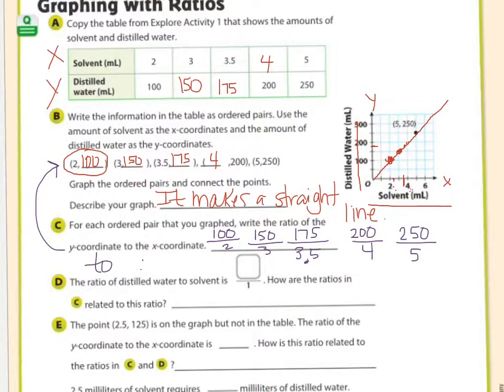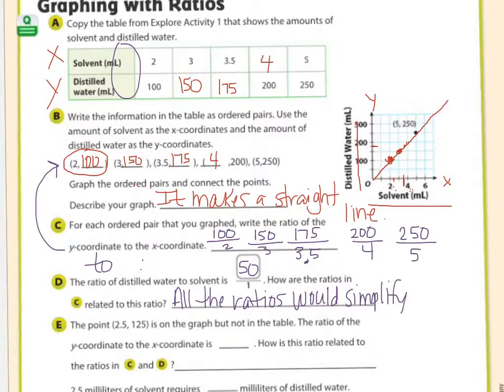D says the ratio of distilled water to solvent is, that would be right here, 50 to 1. How are the ratios in C related to this ratio? All the ratios would simplify to 50 to 1. So I'm going to take like this one right here. What's a common factor of 250 and 5? 5. And that's 50. And that would equal 1.